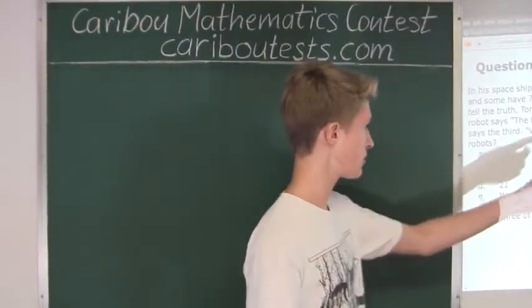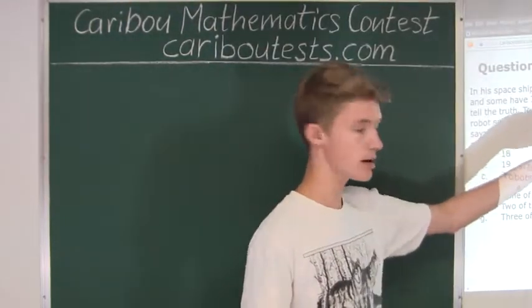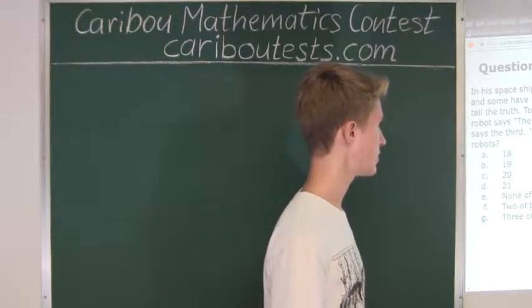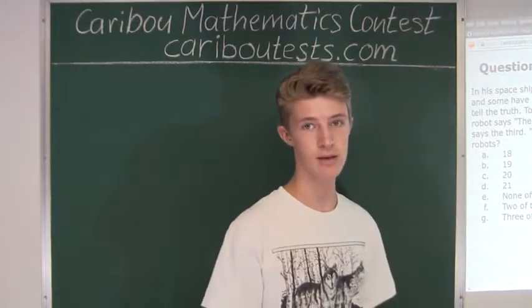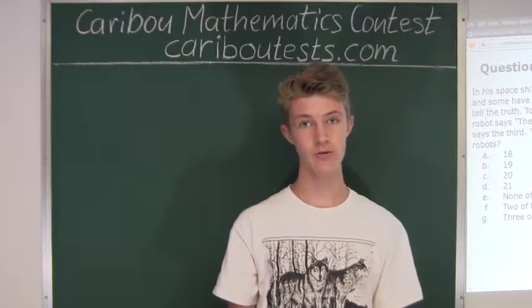The first statement is that there are 21 arms, the second statement is that there are 20 arms, the third statement is that there are 19 arms, and the fourth statement is that there are 18 arms. So we have four different statements from four different robots.